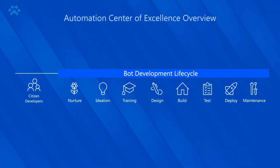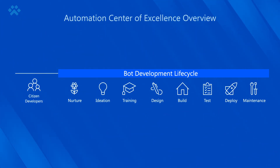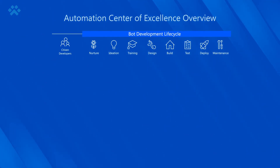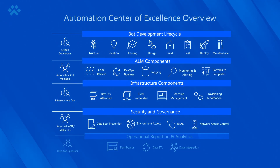The Automation Center of Excellence overview highlights who your major stakeholders are and what some of the functions they might work on are. A citizen developer would be more interested in ideation, testing, and deploying solutions. But automation is not successful as a lone player — it's more of a team sport. The citizen developer must work with Automation COE members all the way to executive sponsors collaboratively. The RPA Maturity Model outlines what maturity means for a citizen developer, an infrastructure ops person, and all their perspectives.